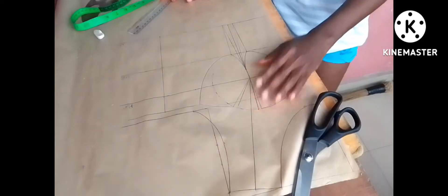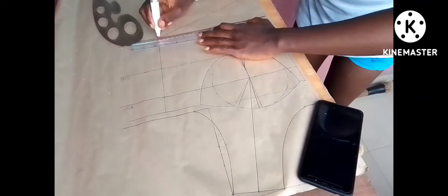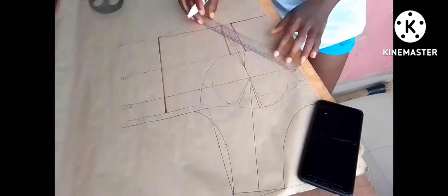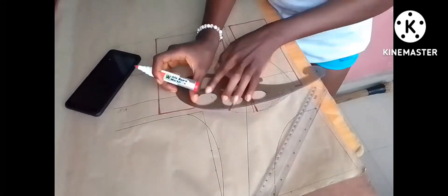So now this is basically all for the front pattern. So I just went ahead to use the marker to outline this part so that you will understand it very well and know the part to cut out. So watch what I did.